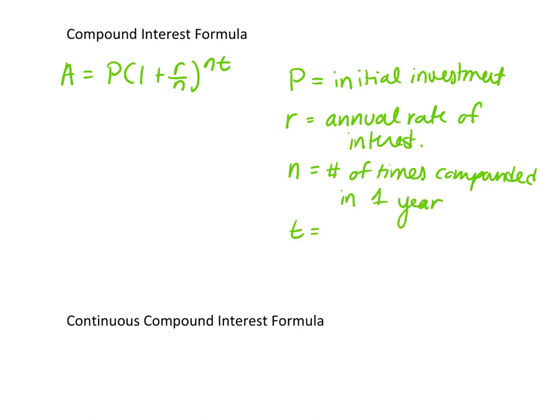T is the amount of time it's invested, and that's in years. And A is the balance after t years.